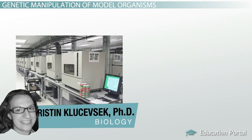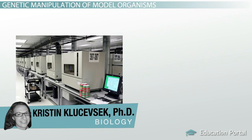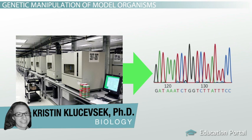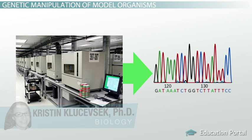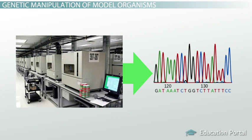We're at the point in science where we can figure out the DNA sequence of every living thing. However, our next task is to figure out what all the sequence means. How do we know what each individual gene does?